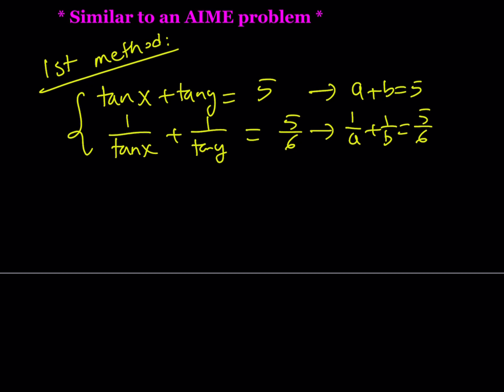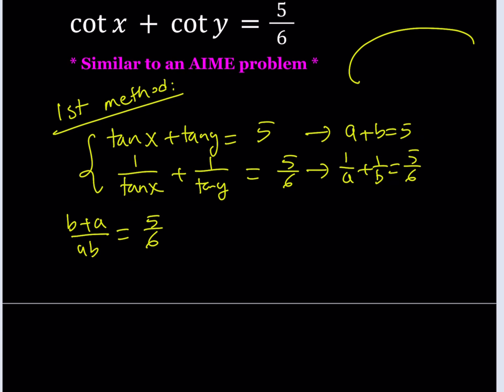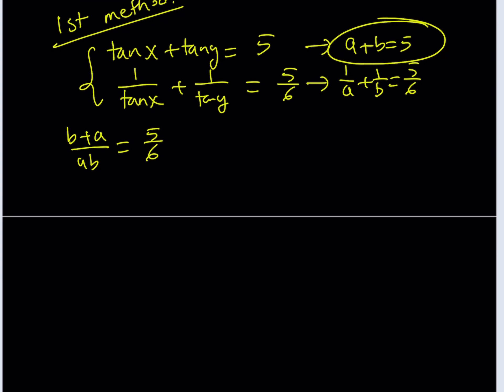So go ahead and simplify the second one. By making a common denominator, we get b plus a divided by ab equals 5 over 6. Now, remember, a plus b is equal to 5. So this is 5, which indicates that ab must be 6. This implies that ab equals 6 and we already know a plus b equals 5.